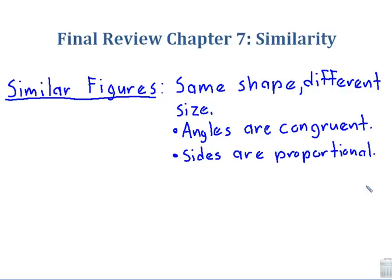Chapter 7 was all about the mathematical idea of similarity. We talked about similar figures, basically two shapes that had the same shape but different sizes. Real-world examples include scale drawings and scale models.